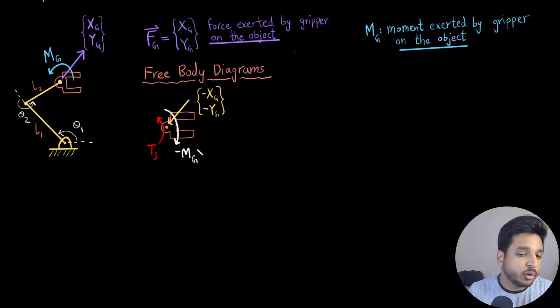So here I have drawn the free body diagram of the end effector. So in this case, I have drawn the yellow, which is minus Xg and minus Yg, being the forces that are exerted on the end effector. And then I have drawn minus Mg as the moment which is exerted again on the end effector. And T3, which is the torque 3, is the moment which is generated by the third motor, which is the motor right here. So the torque that is exerted by this motor, I have represented it by T3.